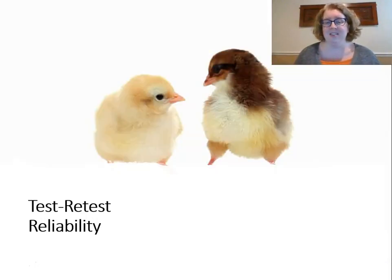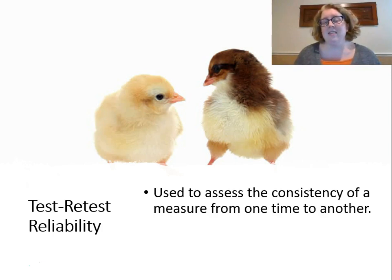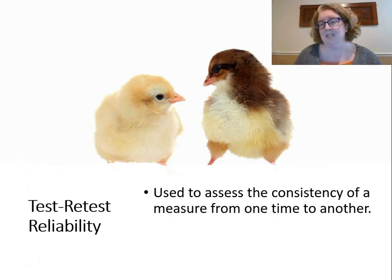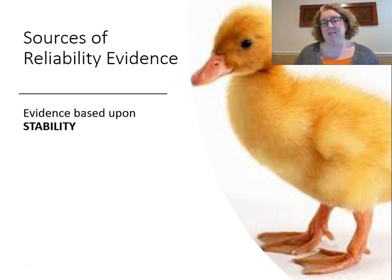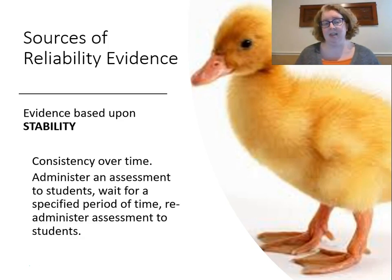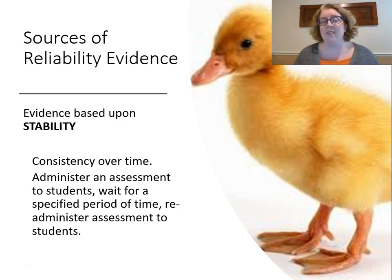The next type is test-retest reliability — the consistency of a measure from one time to another. It's sometimes theoretical: if I could give a test once and then give it again under the same circumstances, without the student learning anything or remembering what was on the test, that would show test-retest reliability. Most standardized achievement tests have some measure of this. It's evidence based upon stability of the test — we'd administer it, wait a specific amount of time, and administer again, without learning or teaching happening in between.